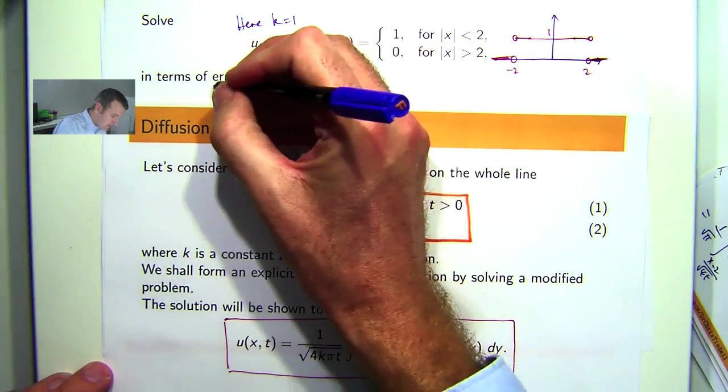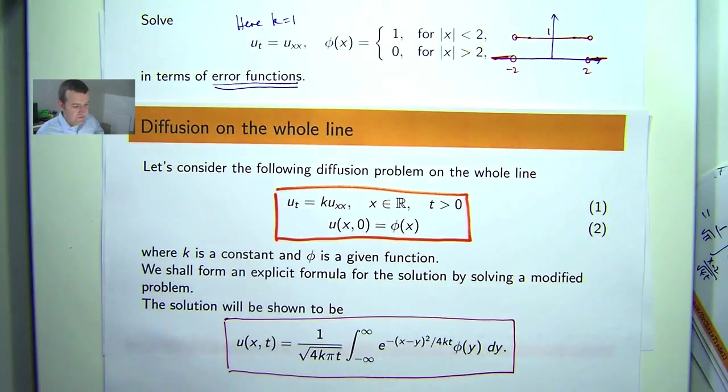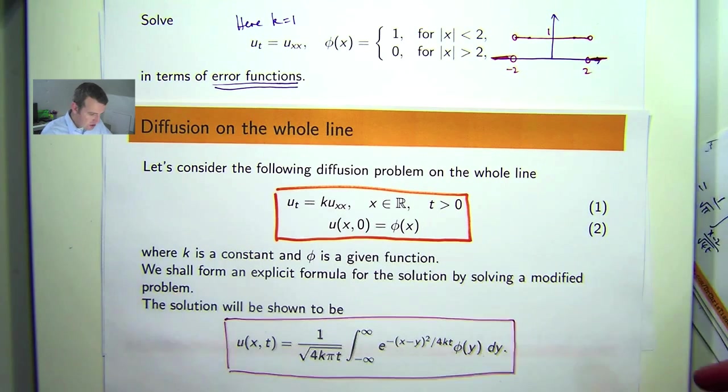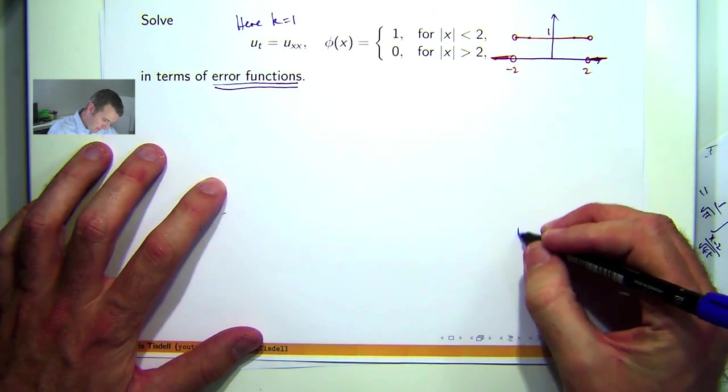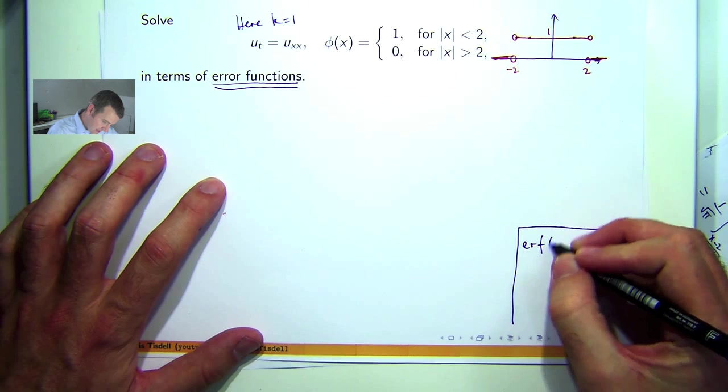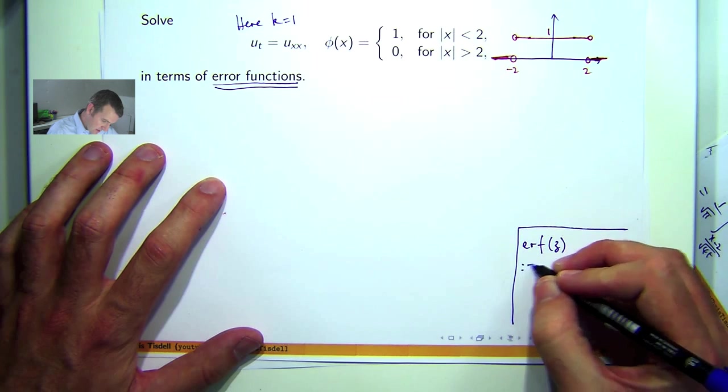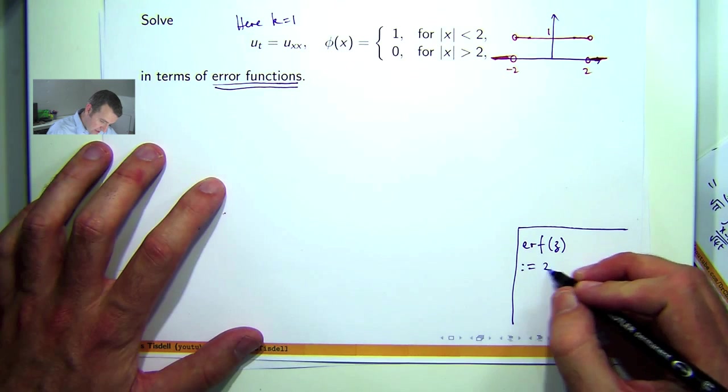Now we're asked to compute the solution in terms of what's known as error functions. Now error functions are special functions in applied mathematics that arise all the time and especially with this diffusion or heat equation. So just to refresh everyone's memory, the error function which is denoted by this, this erf or e-r-f of z, is defined to be the following.